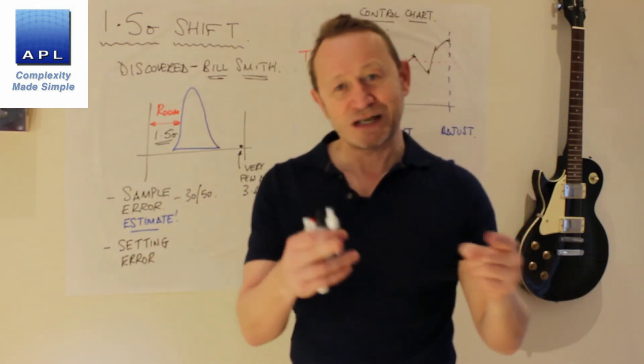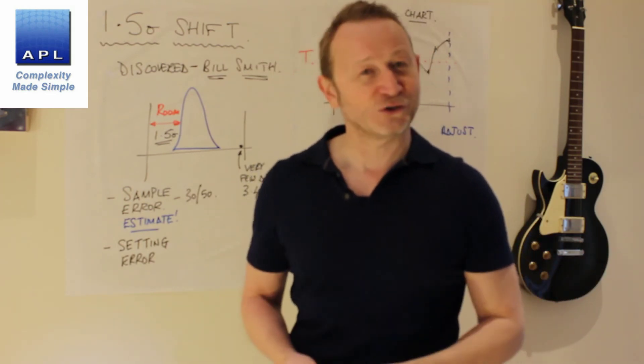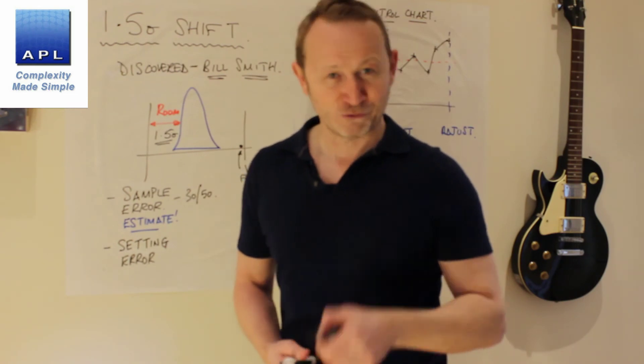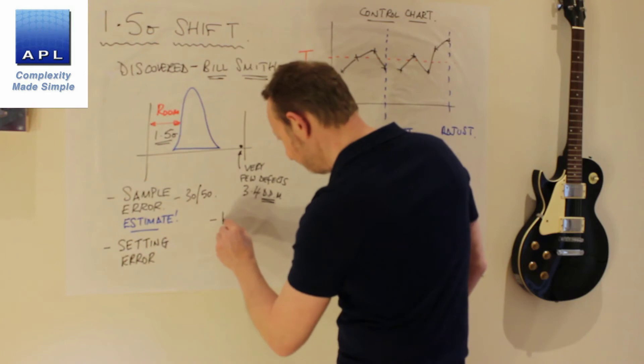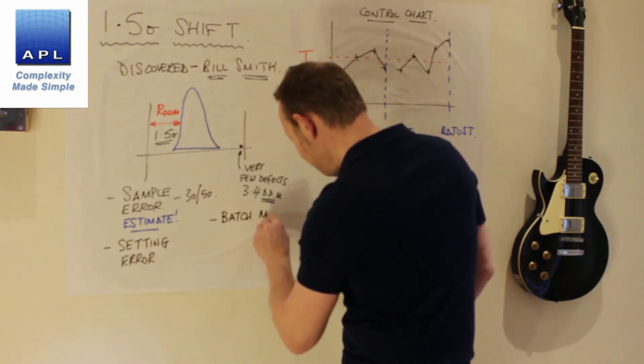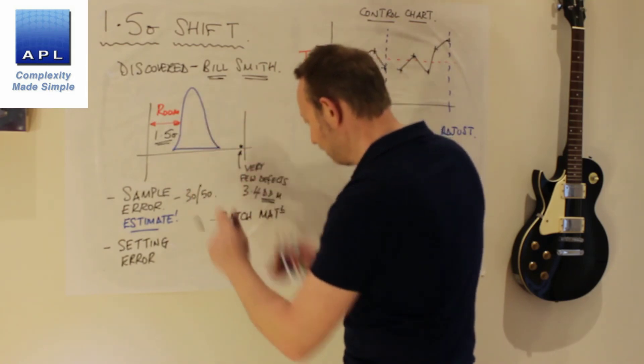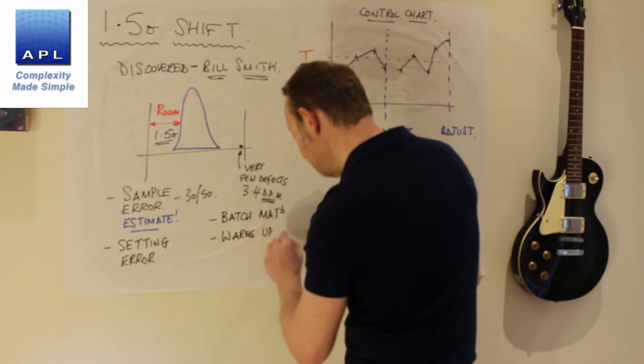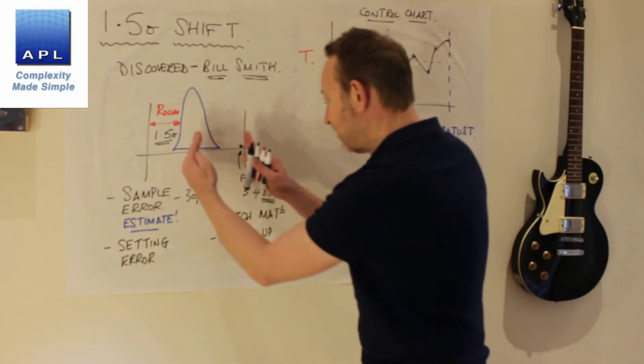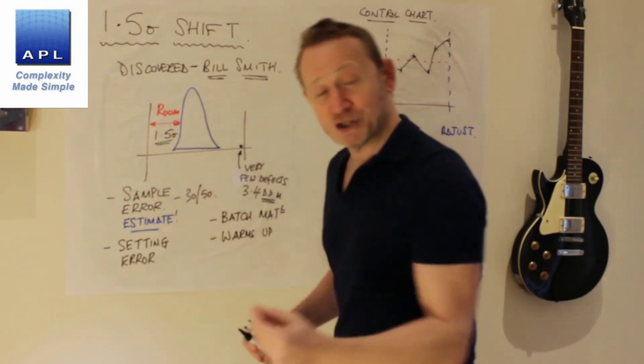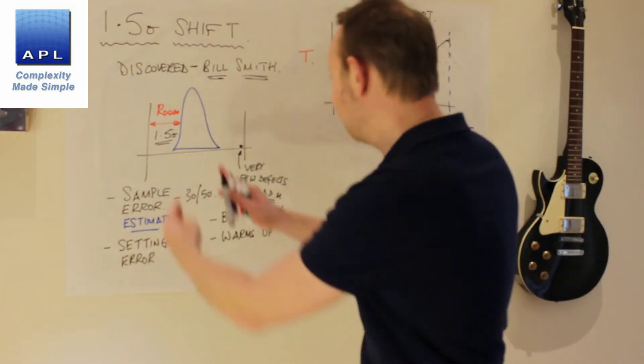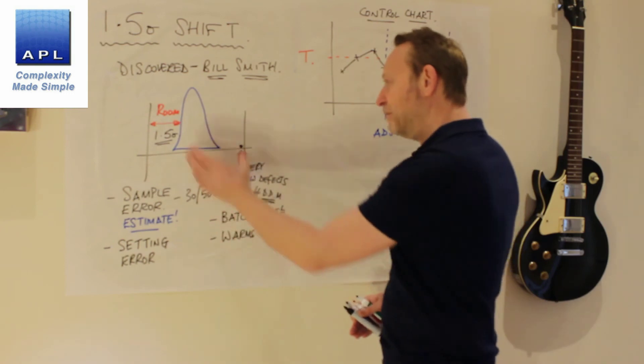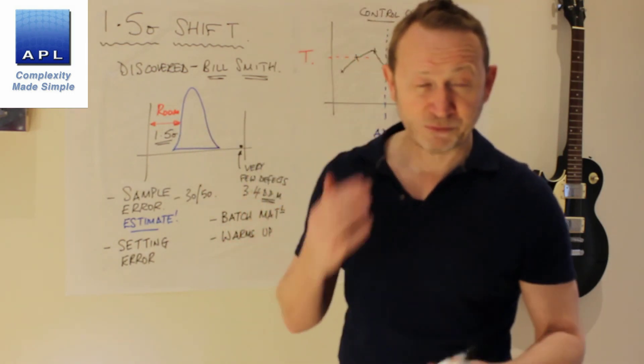Just those two reasons alone means that every time you look at your process, it's almost always going to look like it's somewhere new. And that gives the impression that it's wandering about by one and a half sigma. Now, there are real reasons why it might move. You might have a new batch of material. That might give it a kick. You might have a machine that warms up during the shift. That might make it gradually drift one way. And then you take a break. You let the machine cool down again. You come back after a 15 minute break. Machines maybe wandered back a little bit and you run it again. The machine goes for a little wander.